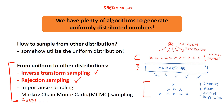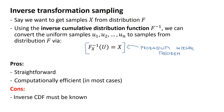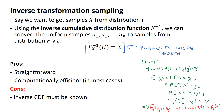So let's have a look at inverse transform sampling. Let's say we want to get samples X from some distribution F — it can be normal, exponential, whatever. We can utilize the inverse cumulative distribution function, which is basically the quantile function, to convert uniform samples into samples from the distribution F. We can use something called the probability integral theorem to get this — there's a proof, and it's actually very simple.